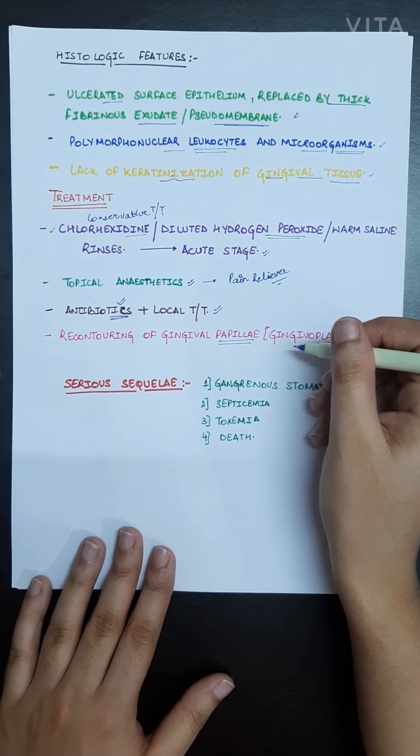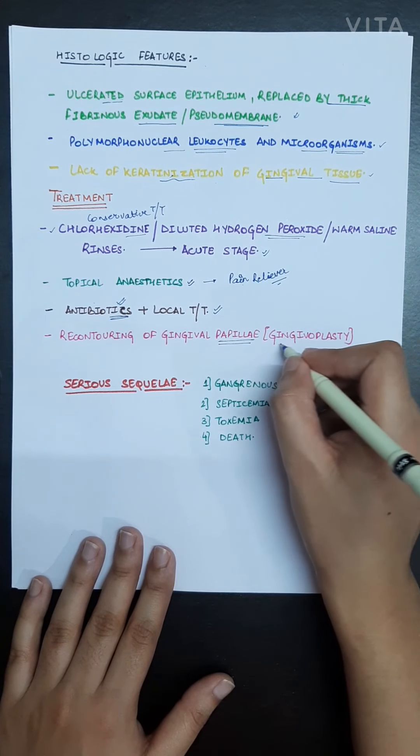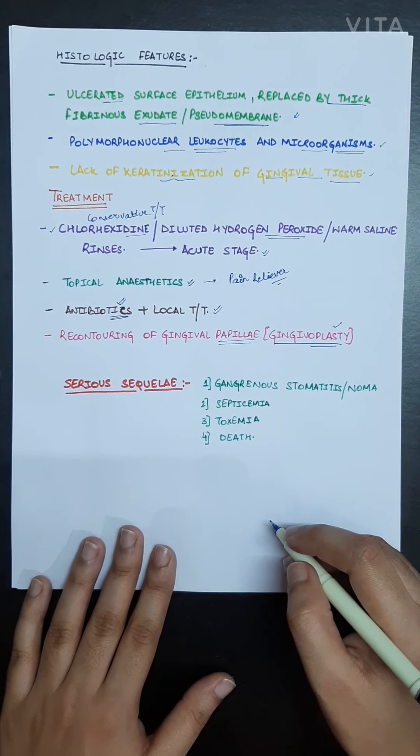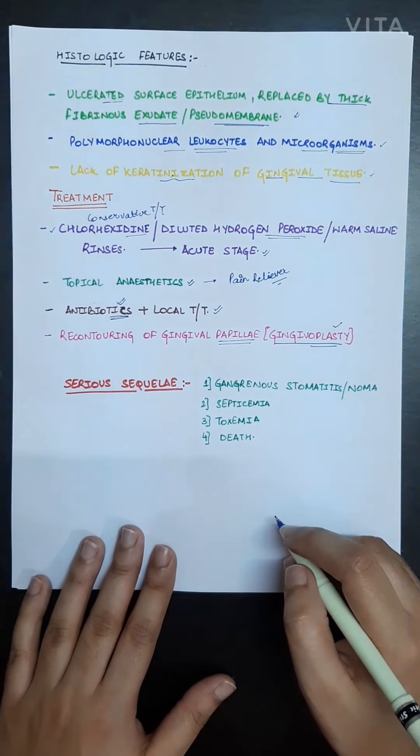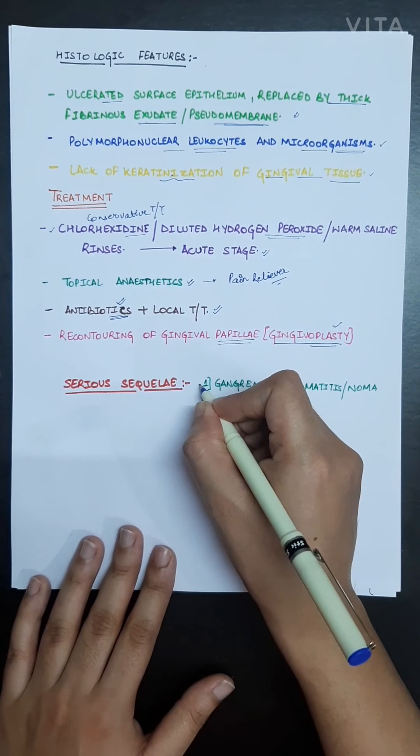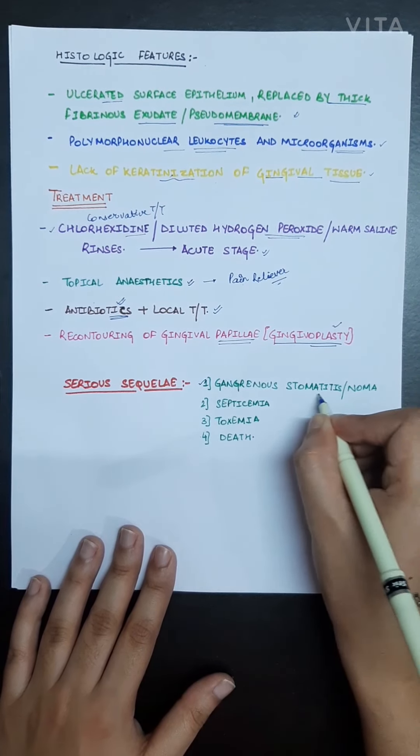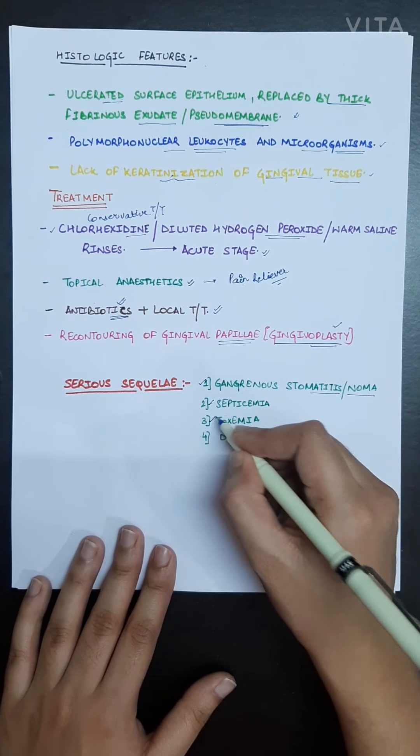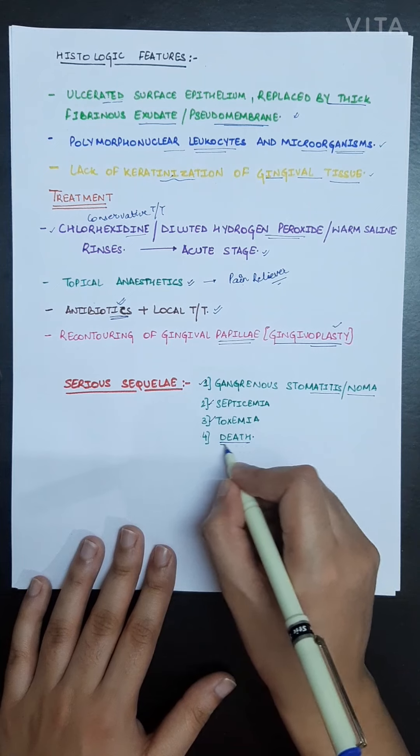Now the serious sequelae of ANUG or NUG: gangrenous stomatitis or noma, septicemia, toxemia, or even death may occur.